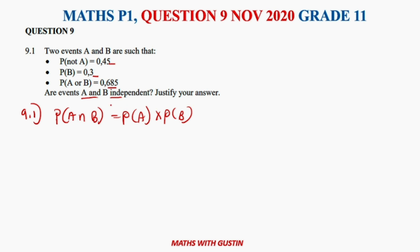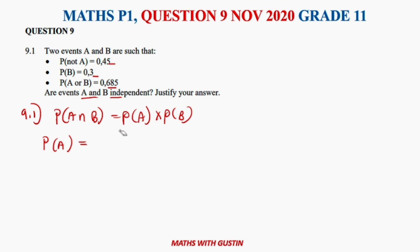Let's look at what is given. We need the probability of A. We are given the probability of not A, so the probability of A is given by one minus the probability of not A. Therefore it's going to be one minus 0.45, which gives us 0.55 — that is the probability of A.